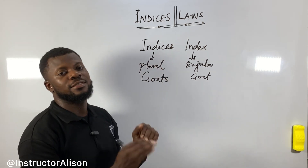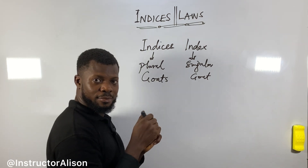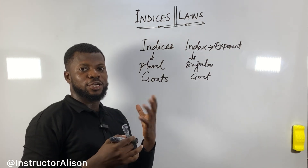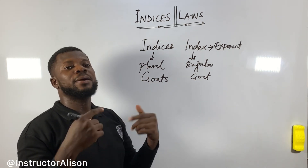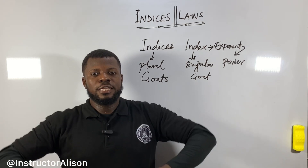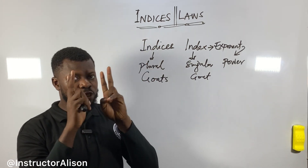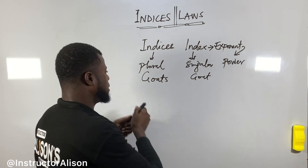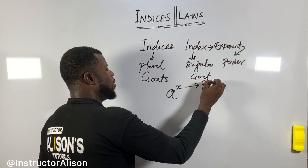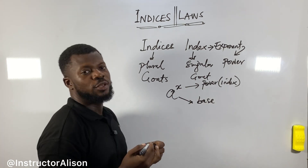Index and indices have the same meaning. An index is something written on top of another number. Another name for it is exponent, or you can call it a power. The number at the bottom is called the base. So for something like 'a to the power of x,' x is the index, exponent, or power, and a is the base.